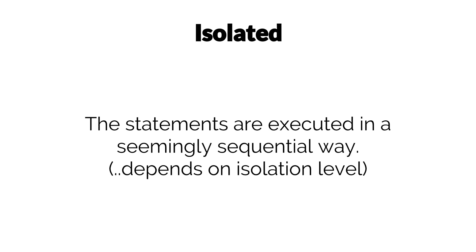For the third property, I for isolated, means that statements are executed in a seemingly consecutive or sequential way. At the highest isolation level, as far as the application programmer knows, each transaction is run after the previous one is fully completed. In practice, a database management system might execute transactions concurrently, but it guarantees the result is the same as a consecutive approach. Lowering the isolation level means concurrently running transactions might affect each other. There is always a tradeoff between the guarantees of a sequential approach at a higher isolation level and the performance gains of a lower isolation level.